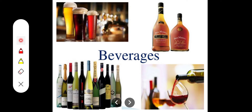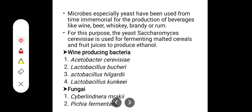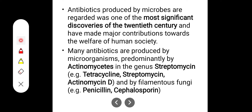Beverages include all soft drinks, hard drinks, wines, beers, and similar products. Microbes — especially yeast — have been used from time immemorial for the production of beverages like wine, beer, whiskey, brandy, and rum. Saccharomyces cerevisiae is used for fermenting malted cereals and fruit juice to produce ethanol. Bacteria used in wine production include Acetobacter, Lactobacillus buchneri, Lactobacillus hilgardii, and Lactobacillus concae. Fungi examples include Cyberlindnera mrakii and Pichia fermentans.